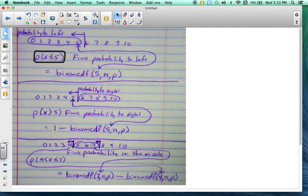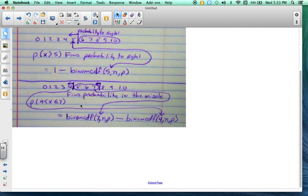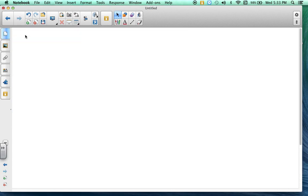If I want to find the probability of something in the middle, all right, so between 4 and 7. It's greater than 4, but equal to or less than 7. So 5, 6, 7 are my numbers. I'm going to use binomial CDF of 7, and I'm going to subtract binomial CDF of 4. And then, of course, you just fill in the NNP. And I believe that is it.